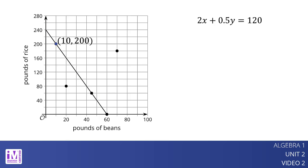Notice that the point is on the line. The points 60, 0 and 45, 60 are also on the line. If we buy only beans, 60 pounds of them, and no rice, we will spend $120. If we buy 45 pounds of beans and 60 pounds of rice, we will also spend $120.